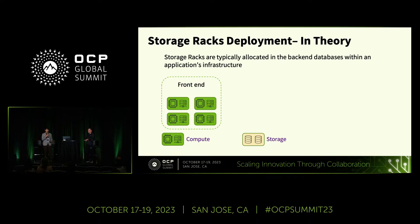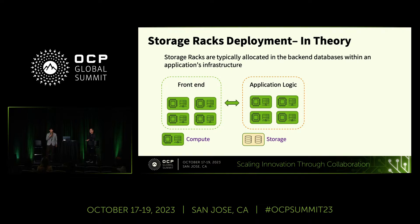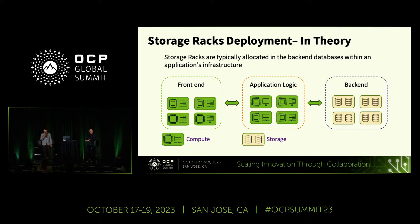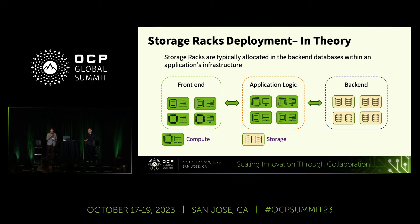For example, for the front end, we might want to have a bunch of compute racks. Taking this idea further in the application logic, where we have input from the front end matching it together with data from the back end in order to produce something useful to our customers, we also can have compute racks. And finally, in the back end — this is our data store, the databases or archival services — typically we want to have storage racks. This is the ideal view of reducing operational burden when managing different types of servers for our services.